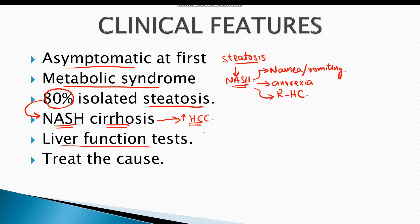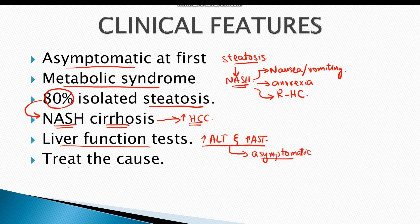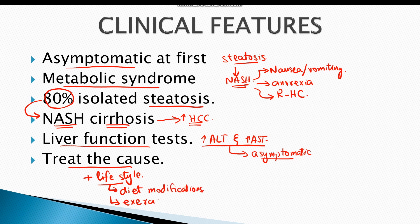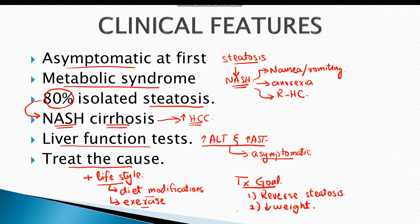Liver function tests indicate increased levels of ALT and AST, which may be elevated even in asymptomatic disease. Treatment is directed towards treating the cause of the disease and improvement of lifestyle with diet modifications and addition of exercise to the routine. The goals of treatment are to reverse steatosis, decrease the patient's weight, and correct the metabolic syndrome. In cases of full-blown liver cirrhosis, the only treatment is liver transplant.